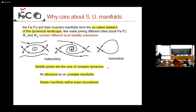For example, this is the scenario for the pendulum: the unstable manifold becomes the stable manifold of the other fixed point. For the damped pendulum, the unstable manifold is attracted to the stable fixed point. These are interesting concepts around stable and unstable manifolds.